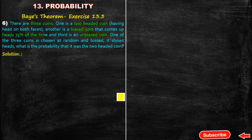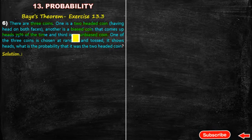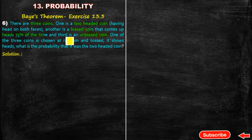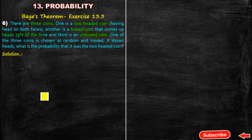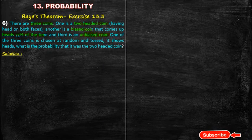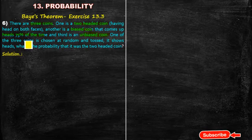One of the three coins is chosen at random. I am going to select one coin and toss it. It shows a head. We need to find the probability that the two-headed coin was selected.